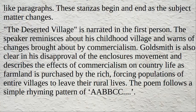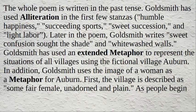The Deserted Village is narrated in the first person. The speaker reminisces about his childhood village and warns of changes brought about by commercialism. Goldsmith is also clear in his disapproval of the enclosure movement and describes the effects of commercialism on country life as farmland is purchased by the rich, forcing populations of entire villages to leave their rural lives. The poem follows a simple rhyming pattern of AA, BB, CC and so on, and the whole poem is written in the past tense.